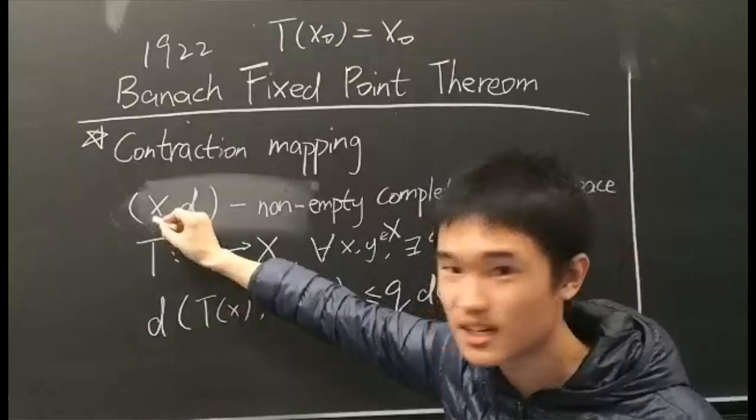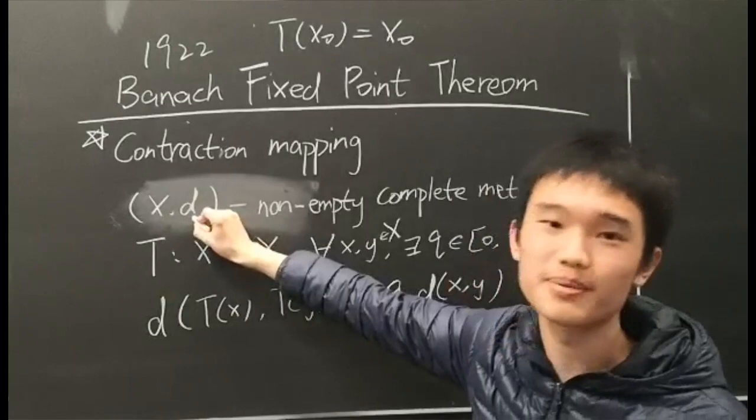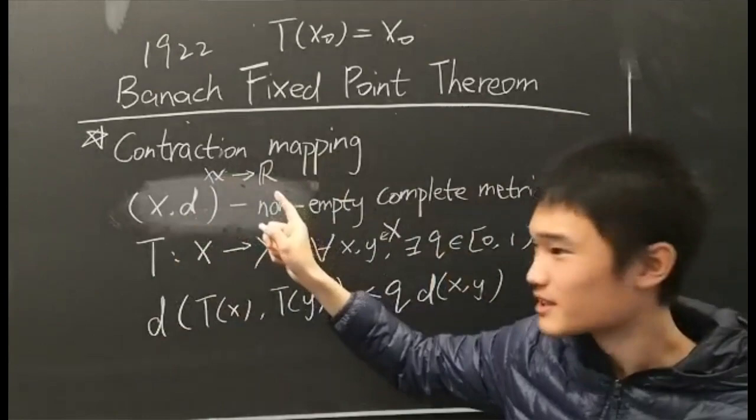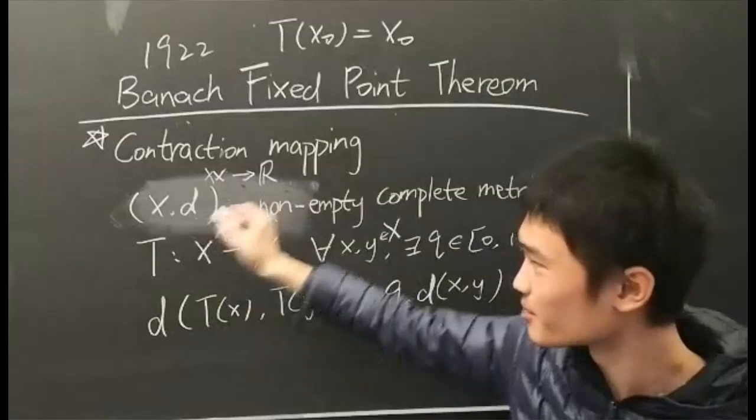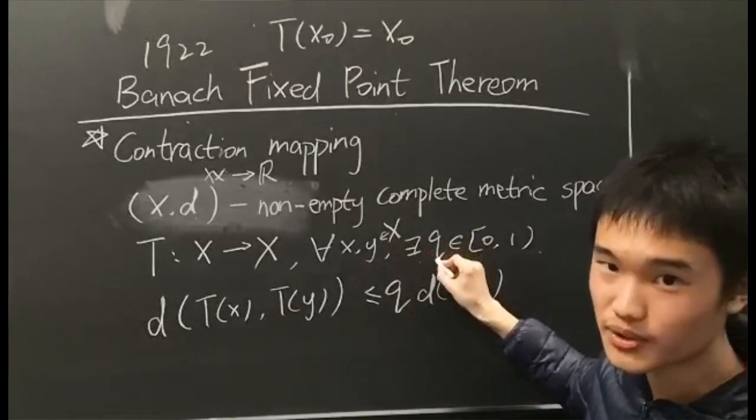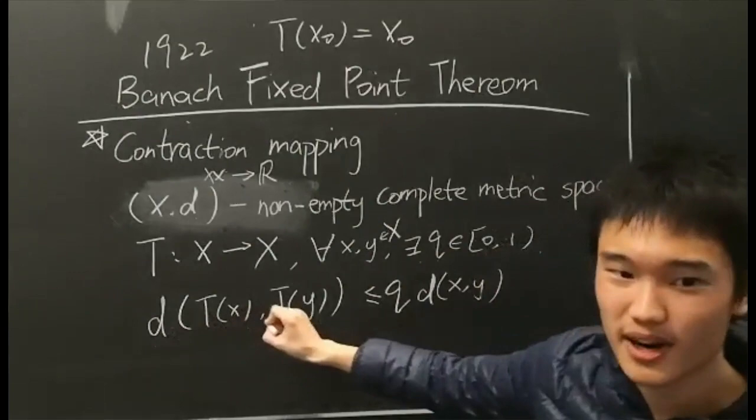And d is a map. Specifically, there is two x times together that leads to an r, a real number. And now we have a T that maps X to X, that for all x, y belongs to X, there exists a real number q, greater than 0 and less than 1, such that d(T(x), T(y)) is less than or equal to q times d(x, y).